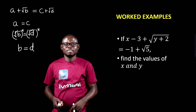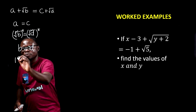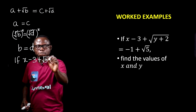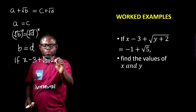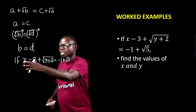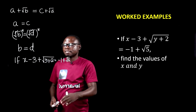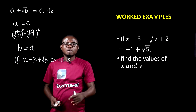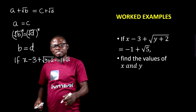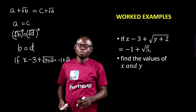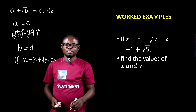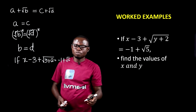Let us consider this example. If x minus 3 plus root of y plus 2 is equal to minus 1 plus root 5, then find the values of x and y. To solve this, we're going to apply the concept of equality of sets, which says that the rational part on the left will be equal to the rational part on the right, and the irrational part on the left will also be equal to the irrational part on the right.